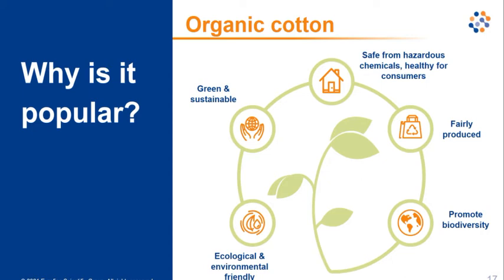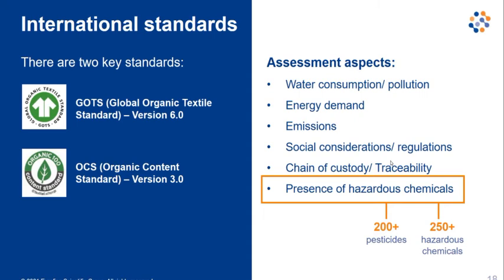Coming back to the certification schemes my colleague Francesco introduced, we can see that these certifications — beyond the non-GM presence requirement — have additional requirements covering many different aspects of the supply chain, including the presence of hazardous chemicals. Other assessed aspects include water consumption, energy emissions, social considerations, chain of custody, and traceability.